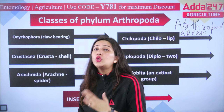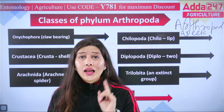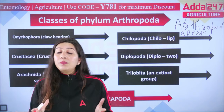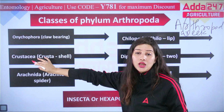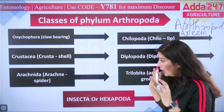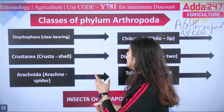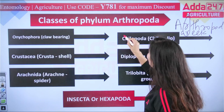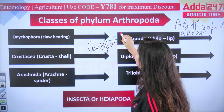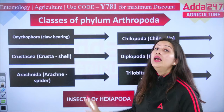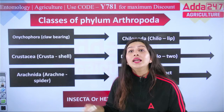In phylum Arthropoda, there is not just one class — there are a total of seven classes. The most important class is Insecta or Hexapoda. The other classes are: Onychophora, Crustacea, Arachnida, Chilopoda, Diplopoda, and Trilobita. The largest class of phylum Arthropoda is Insecta or Hexapoda — this is an important exam question.